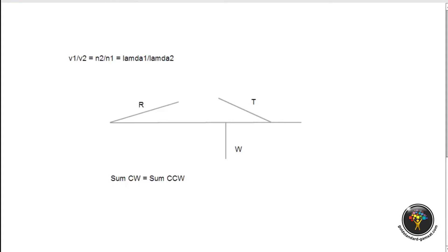For clockwise and counterclockwise torque forces, you need to find a pivot point — the point about which everything is turning. You can choose any point, but pick one that simplifies the problem. Here, ACER gives you the pivot point. All distances are measured from that pivot point. Remember: torque force equals the force applied times the perpendicular distance from the pivot point.